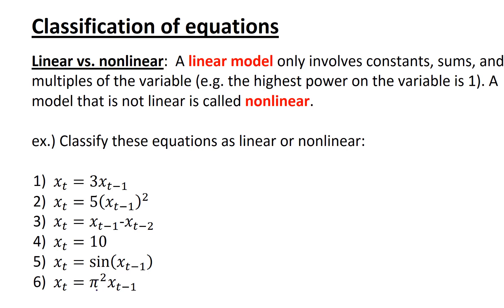Hello, in this video we're going to talk about the classification of equations. So first, we'll talk about linear versus nonlinear. A linear model only involves constants, sums, and multiples of the variable. In other words, the highest power on the variable is 1. It could be 0, but the highest power is 1. A model that is not linear is called nonlinear.